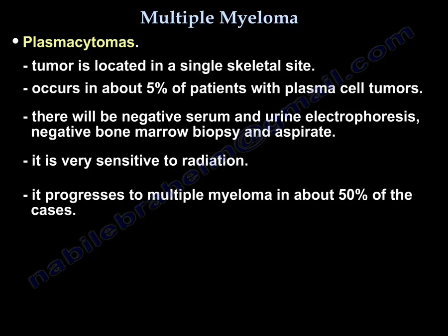Plasmacytoma is a tumor in a single skeletal site. It occurs in about 5% of patients with plasma cell tumors. You will find negative serum and urine protein electrophoresis and negative bone marrow biopsy and aspirate. It is very sensitive to radiation, but progresses to multiple myeloma in about 50% of cases.